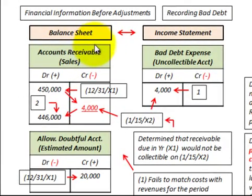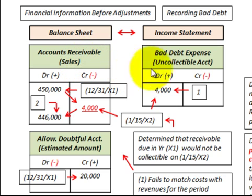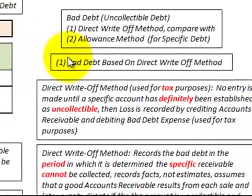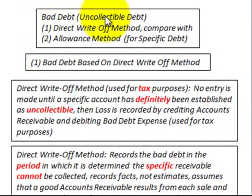Here we're going to be looking at bad debt or uncollectible debt, and we're going to be looking at the direct write-off method and compare it to the allowance method. We have accounts receivable on our balance sheet, and not all of those accounts receivable are going to be collectible. They're recognized as bad debt expense on our income statement. We also have an allowance for doubtful accounts — a contra account for accounts receivable — with an estimated amount listed.